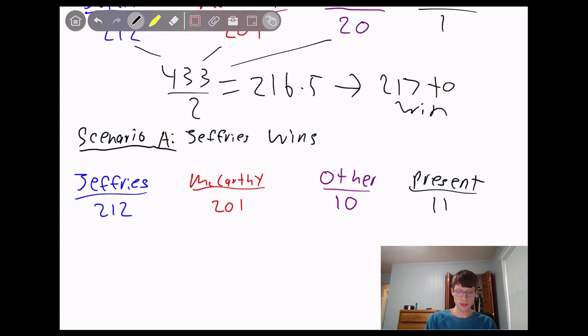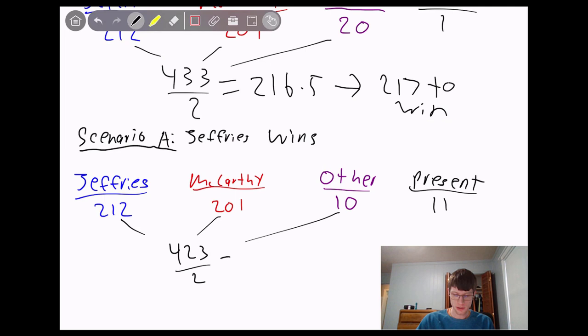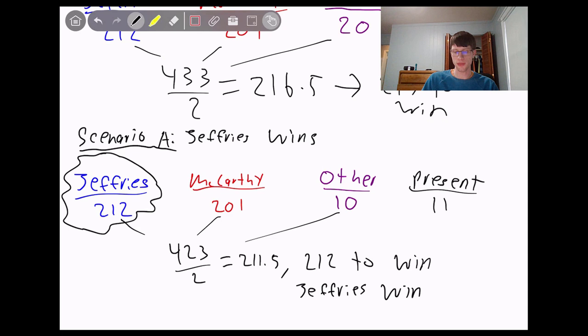And that would be 10 more. So we transfer 10 over. We'd actually be at 11 here. So now if that was the case, if you added up all of those, 212 plus 201 plus 10, you would get 423. And if you divide that by two, you would get 211.5, which means 212 to win. And we would have Jeffries would win. So there we go. We got Jeffries as the winner, if we had 11 people vote present, 10 other and the rest for McCarthy.